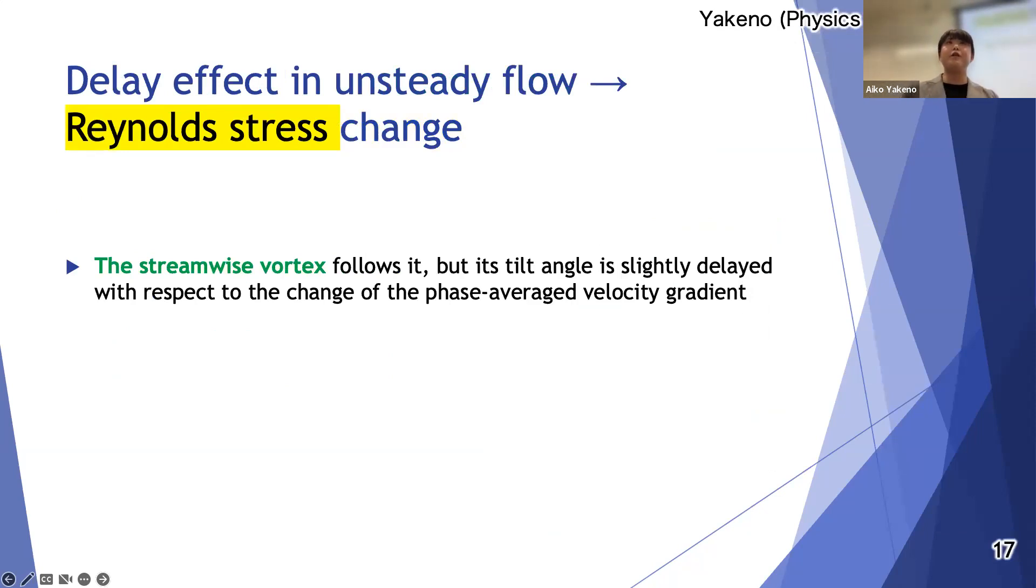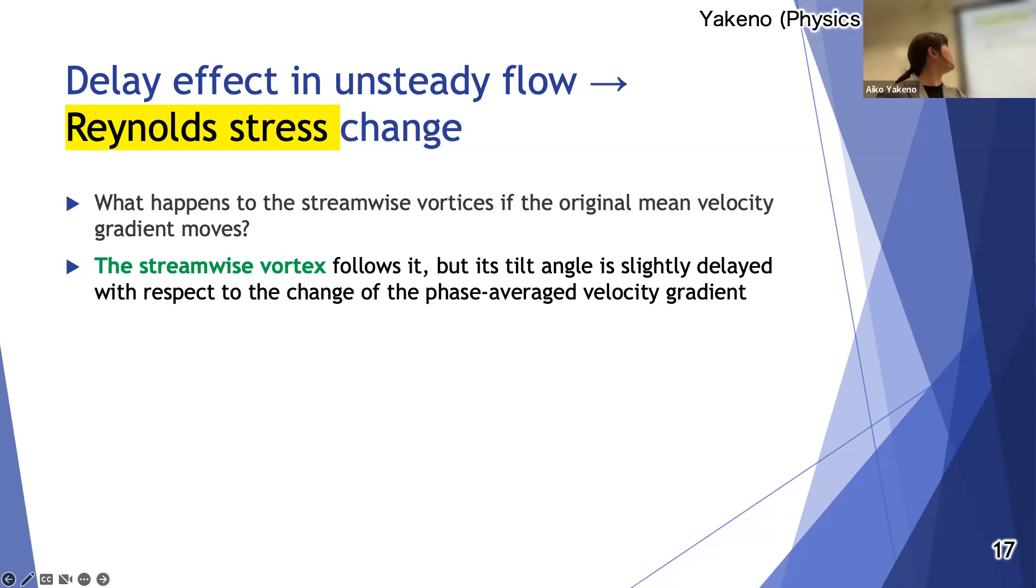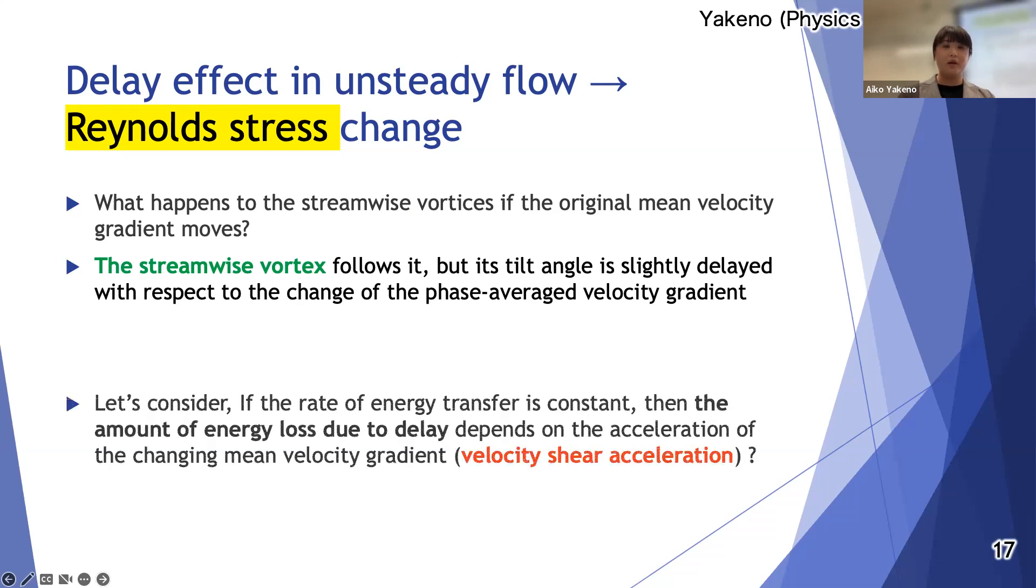Additionally I would like to explain my idea to predict the drag reduction effect. Let's think what happens to the streamwise vortices if the original mean velocity gradient moves. I found some facts: the streamwise vortex follows to the mean velocity gradient, but its shooting angle is slightly delayed with respect to the change of it. Then I consider if the rate of energy transfer is constant, then the amount of energy loss due to delay depends on the acceleration of the changing mean velocity gradient.